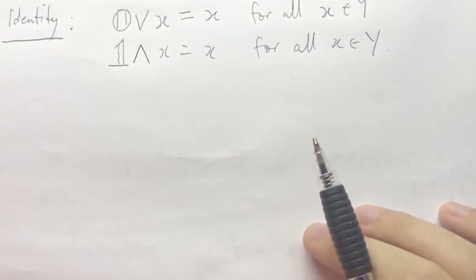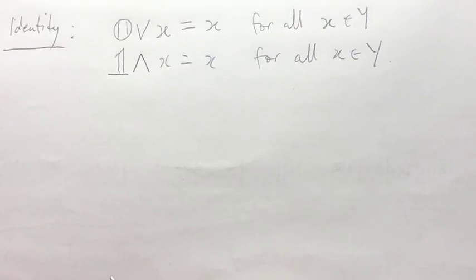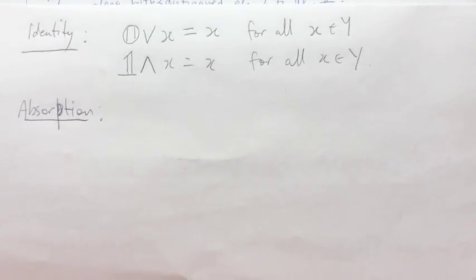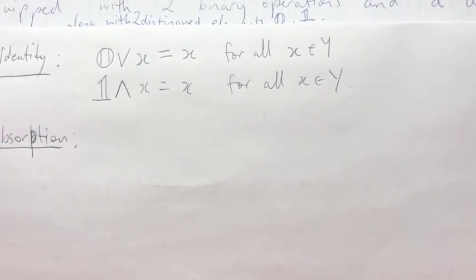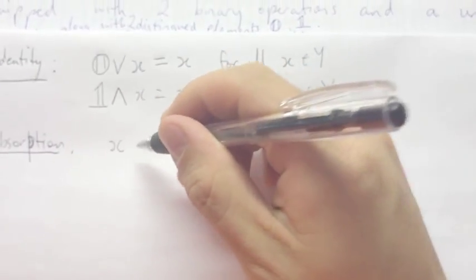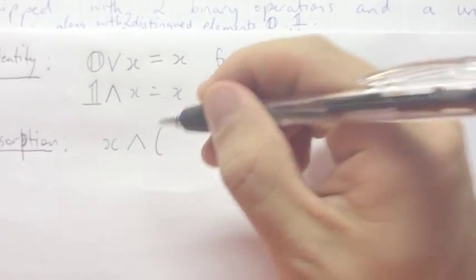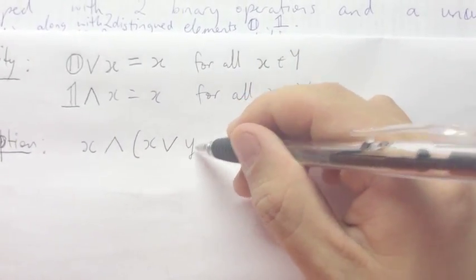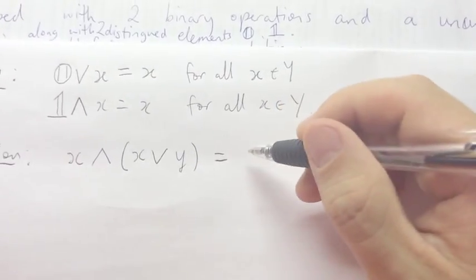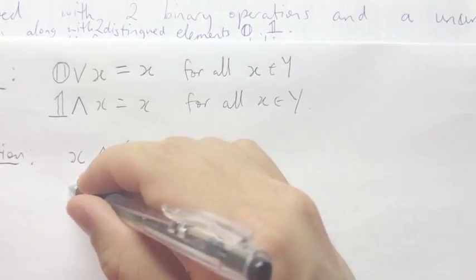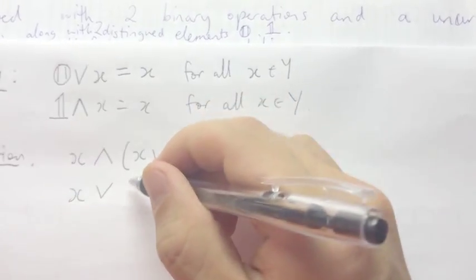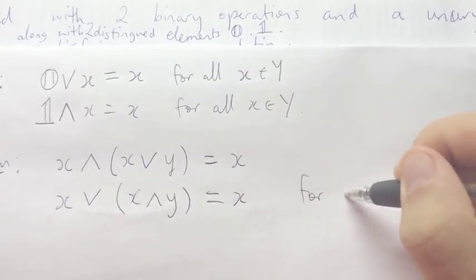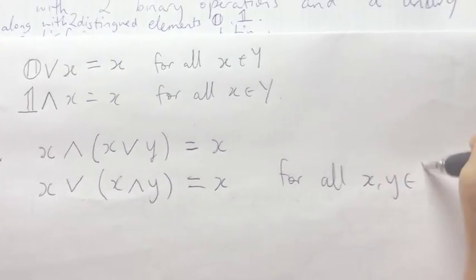We have another axiom that seems very special for Boolean algebra — it's called absorption. It goes: x wedge (x vee y) is equal to x, and x vee (x wedge y) is equal to x, for all x and y in Y.